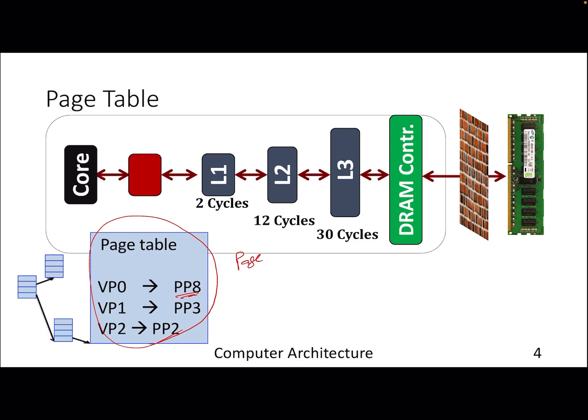The process of translation from virtual address to physical address is known as address translation. We are not going for the data yet — we are just trying to find the physical page. Once we get the physical page, we go to the corresponding physical address and then get the data.